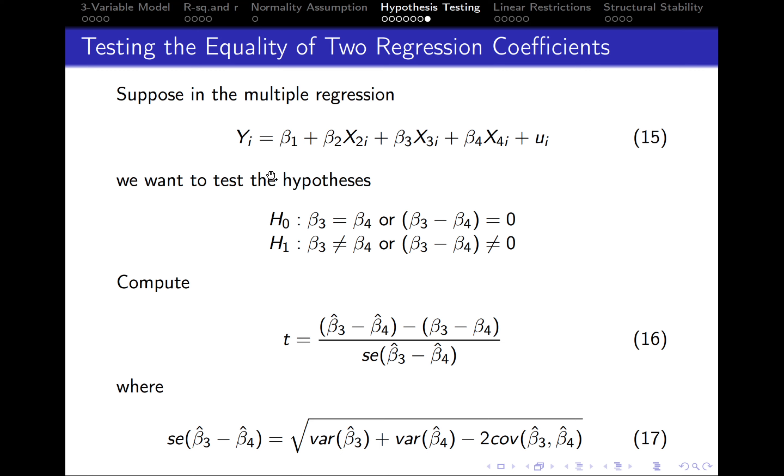We've got x2, x3, x4, and we want to test the hypothesis that beta 3 is equal to beta 4, or the difference between beta 3 and beta 4 is 0. And we would like to test this hypothesis against the alternative one, that beta 3 is not equal to beta 4, or that the difference between beta 3 and beta 4 is not 0.